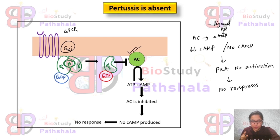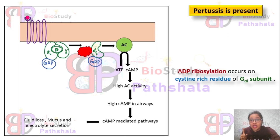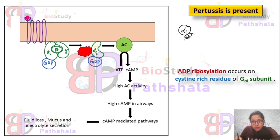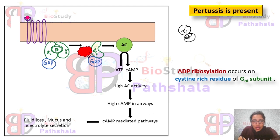Second scenario: Pertussis toxin is present, meaning ligands are available to bind with the receptor. When this ligand binds to its receptor, it causes ADP ribosylation on the alpha-i subunit. This ADP ribosylation occurs when the alpha-i subunit is in its GDP-bound state, and it occurs mainly on the cysteine-rich residue of the alpha-i subunit.